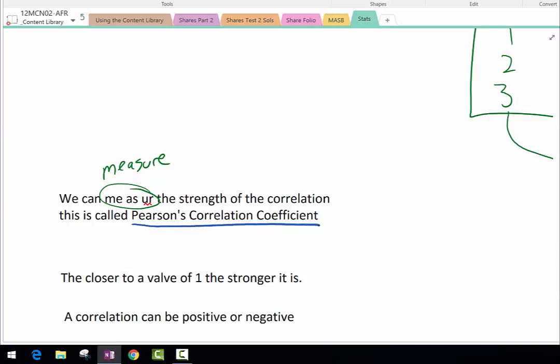The coefficient tells us how strong the piece of data is. The closer to a value of one, the stronger it is. If you worked out Pearson's correlation coefficient to be 0.95, that is a very strong correlation.